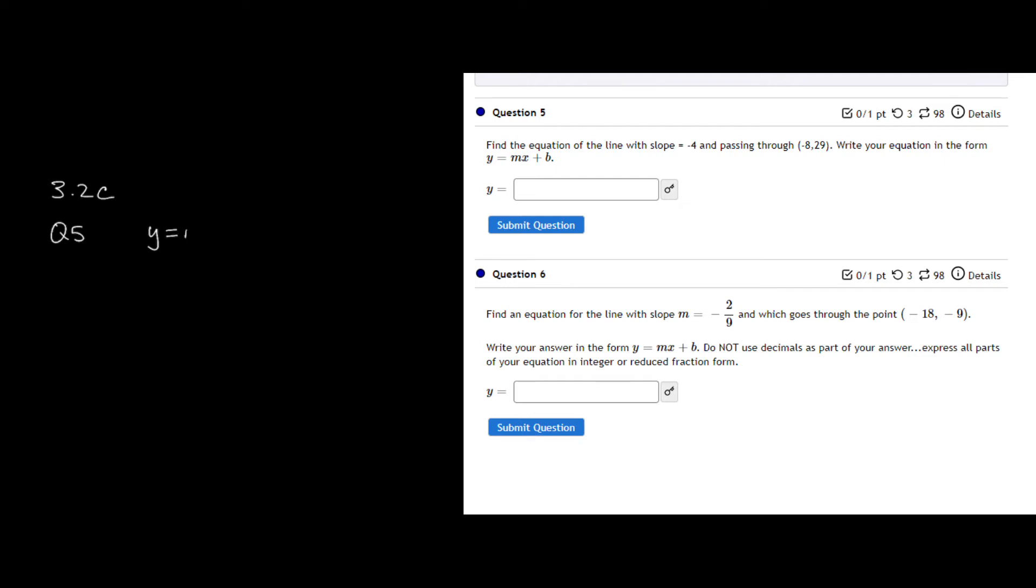And we know that we can start with y is equal to mx plus b. And they are telling us that the slope is negative 4. So I know m is equal to negative 4, our slope, and passing through a point negative 8, 29. So what we're going to do with this equation, we're going to plug in the values for x and for y and for our slope.